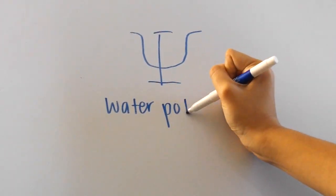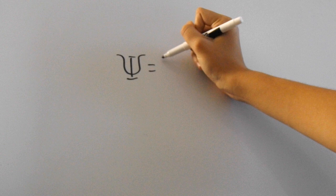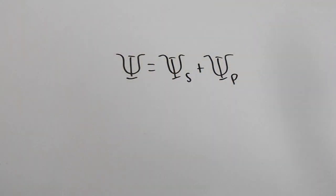Water potential can determine the direction in which water will flow. It's influenced by solute concentration and pressure. Here's the formula. Water potential equals solute potential plus pressure potential.